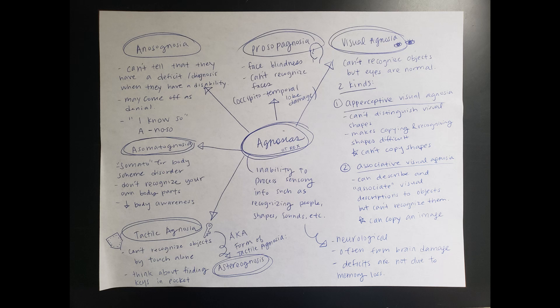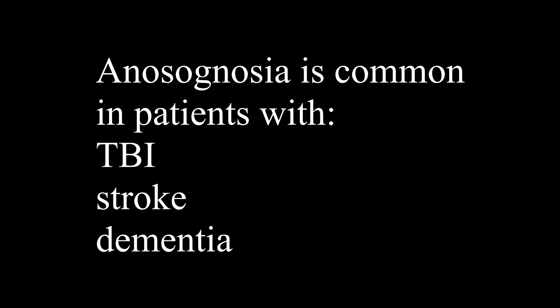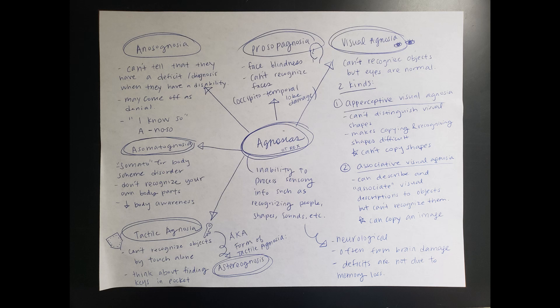They don't realize they have a need or deficit that's going to impact their activities of daily living. A silly way to remember anosognosia is 'I know so' — it sounds very similar to the actual name. If you told someone with anosognosia that they can't do something, they'd say 'I know so — I know that I can do this.' I think of someone relentlessly saying 'I don't have a deficit, I don't have a disability, I could climb those stairs — I know so.'